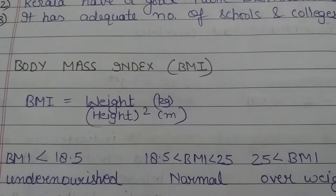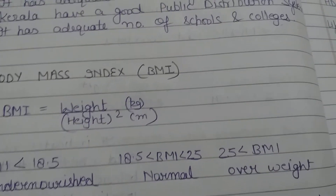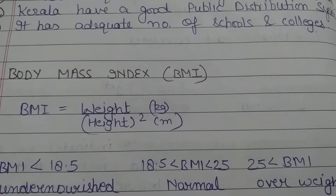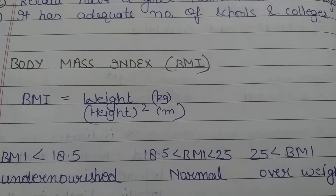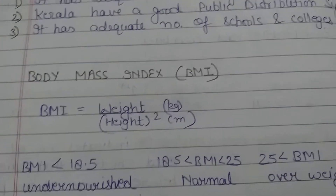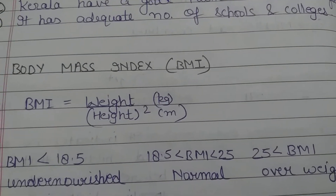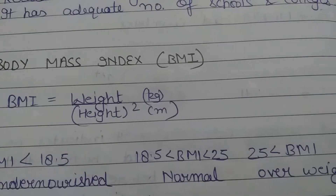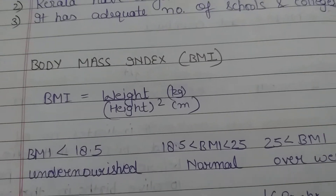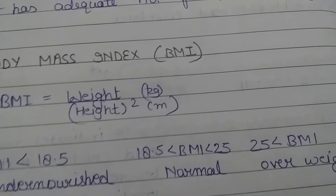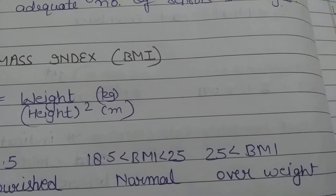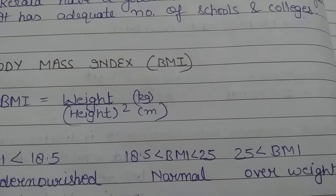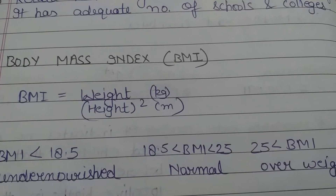Next is Body Mass Index (BMI). How do we find it? Weight divided by height squared — weight should be in kg and height in meters. If BMI is less than 18.5, it means we are undernourished and need more nourishment and food. If it is more than 25, it means we are overweight. And if it is between 18.5 and 25, it means normal. This is the formula for finding BMI.